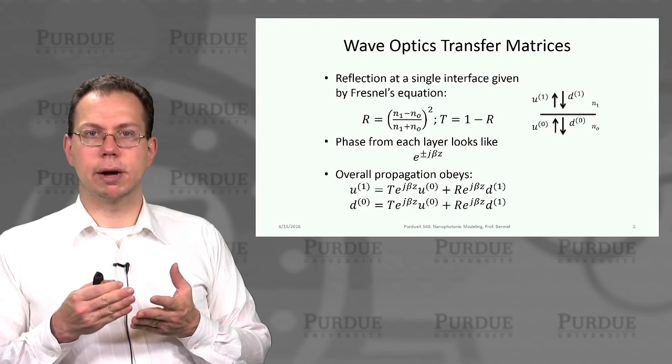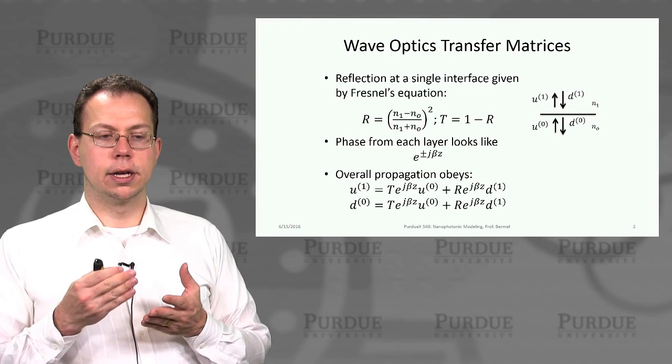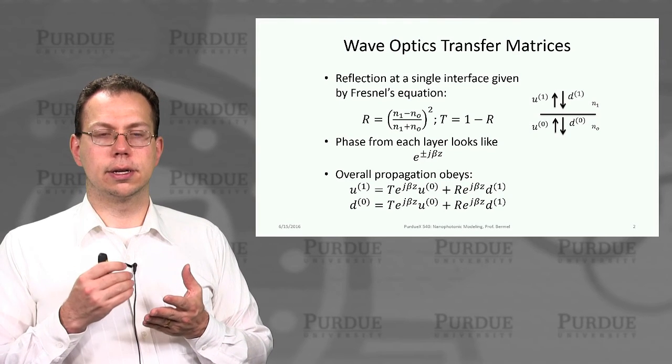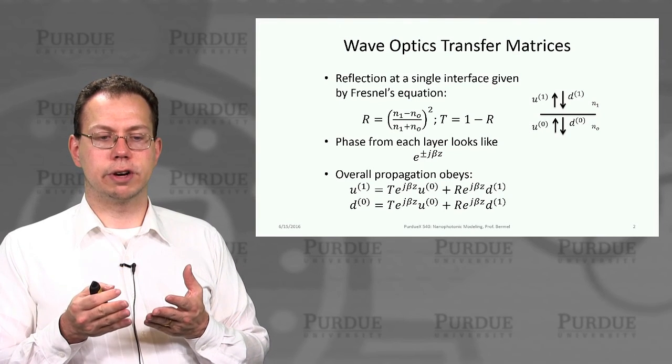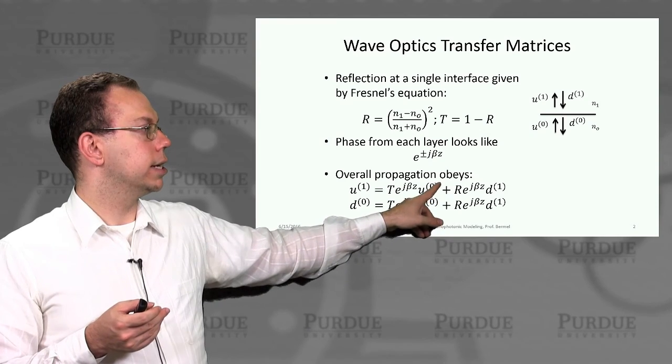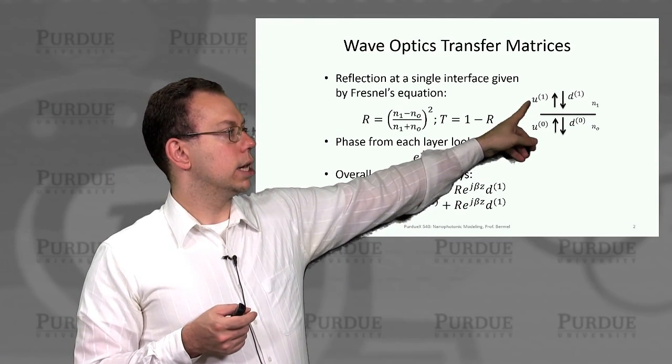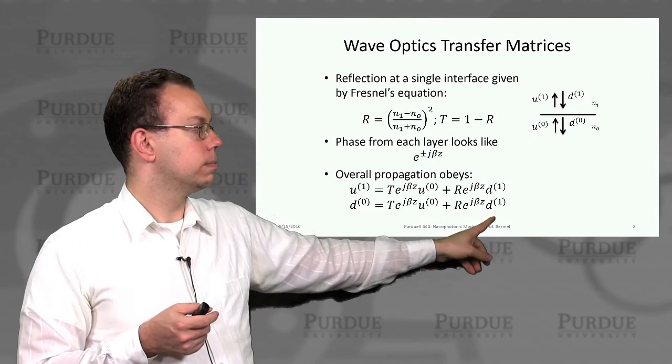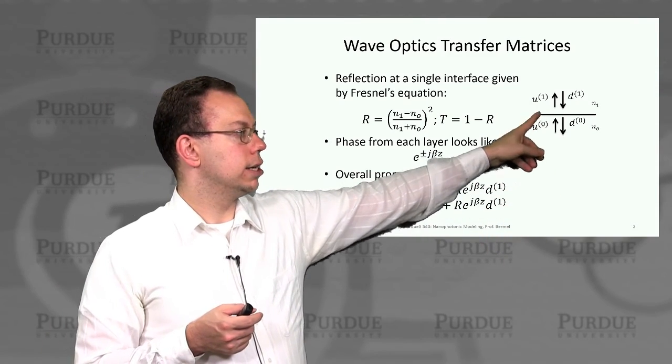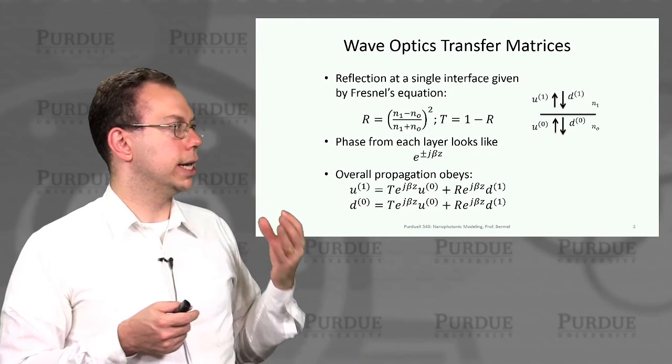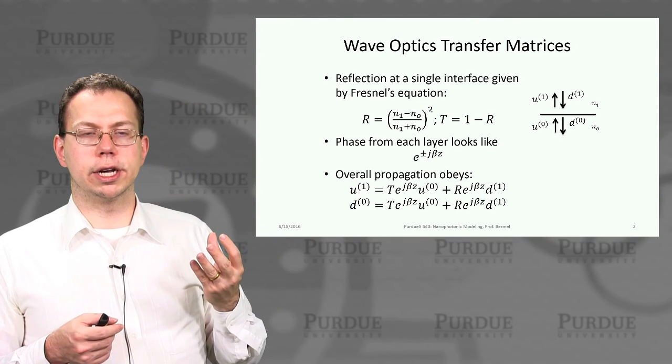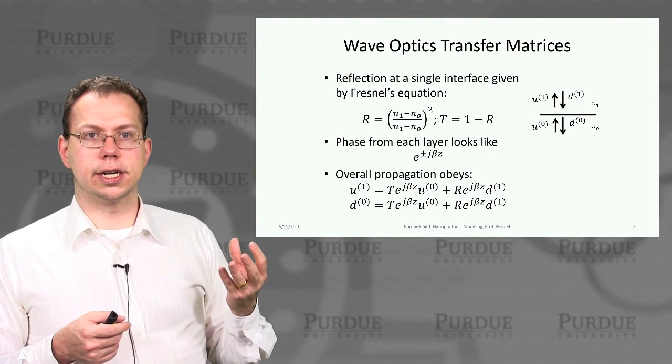And so then the overall propagation is going to depend on both the phase and the absolute reflection. And so we can write that the outputs of this system would be u1 and d0 as a function of u0 and d1. Or we could also write that u1 and d1 are the inputs, and then u0 and d0 are the outputs.